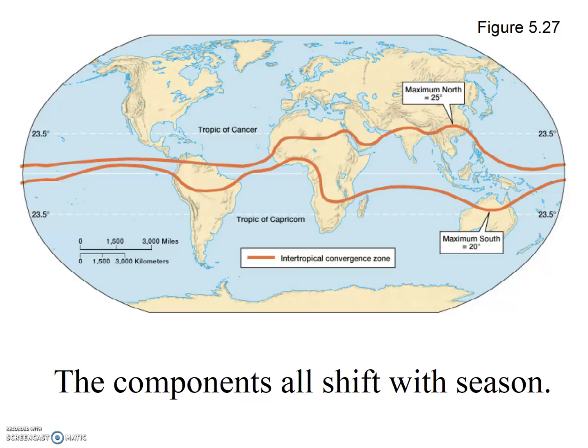This textbook diagram shows the seasonal migration of the intertropical convergence zone, ITCZ. Notice that in general it fluctuates more over land than over ocean. Why is that?